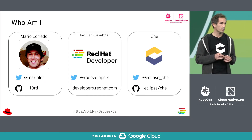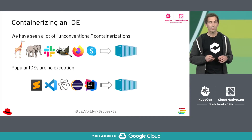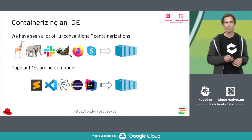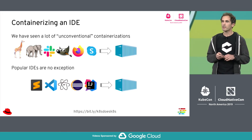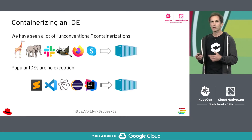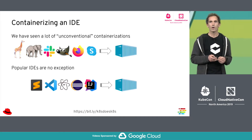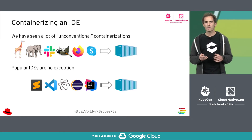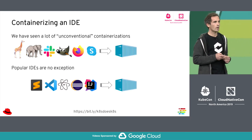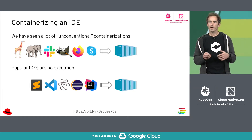Eclipse Che is a web IDE that runs in containers. Let's start from the beginning. In the last years we've seen a lot of people, including myself, trying to run a lot of applications of different types — what we call unconventional containerization — trying to use desktop applications inside containers, including IDEs like Eclipse, IntelliJ, or Sublime Text. But that doesn't work; those applications are not built to run in containers. That didn't get traction. But the idea to have a containerized IDE, shared with your whole team, with a repeatable development environment, will help teams go faster and scale. For that reason, we built Che.